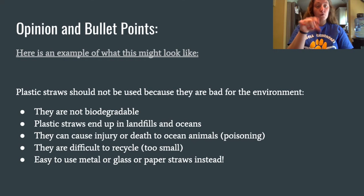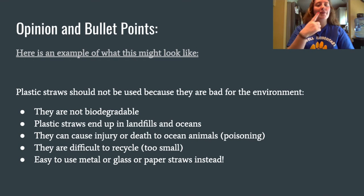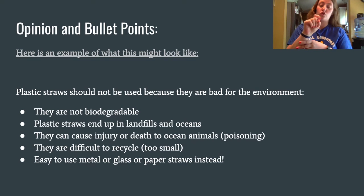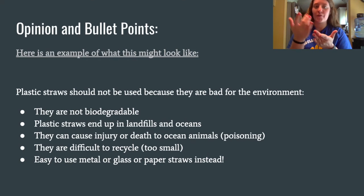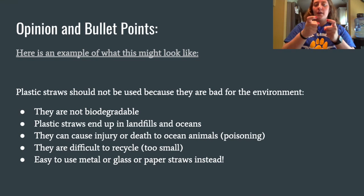If you choose to just give your opinion and give bullet points for why you believe what you believe, here is an example of what this might look like. I read an article where the author says plastic straws are a big problem, and I had to decide if I agreed with that author's point of view. It turns out that I do agree, so I said: 'Plastic straws should not be used because they are bad for the environment.' Then I jotted down the facts from the article. Notice these are not complete sentences — they are fragments, and that is okay because I'm still getting my point across and giving details from the article.